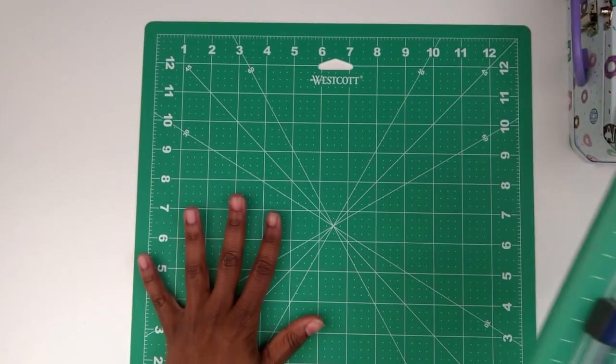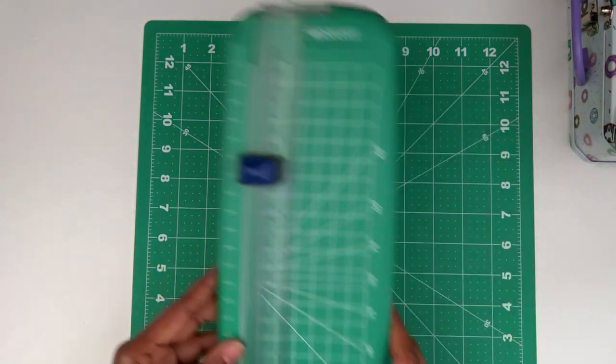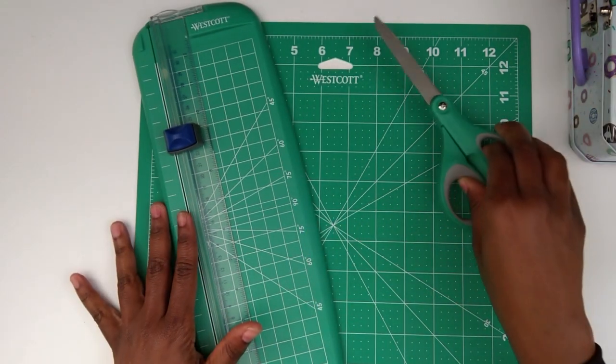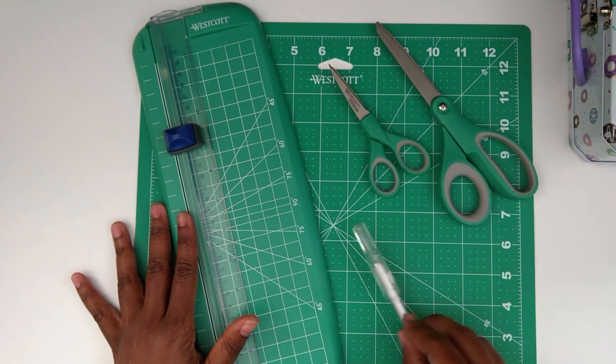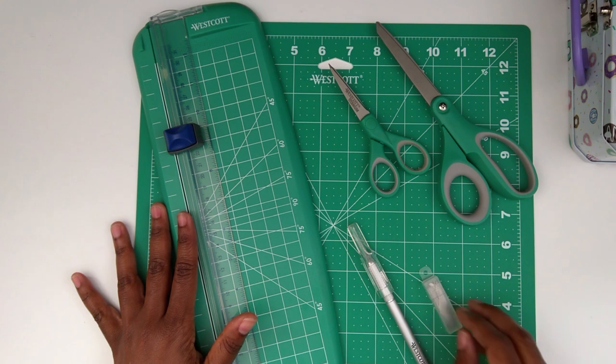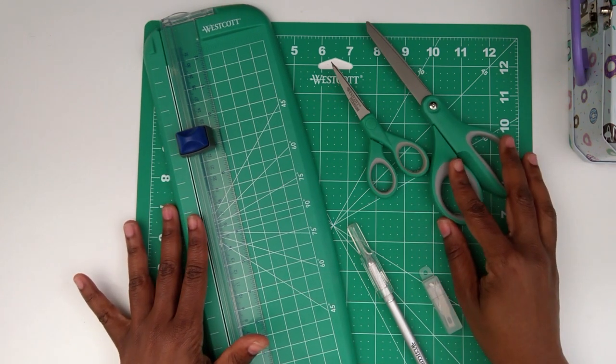So once again, you get the cutting mat, the paper trimmer, the two pairs of titanium bonded scissors, the craft knife, and the five additional blades. And I think this was a steal for $14.